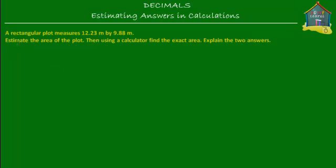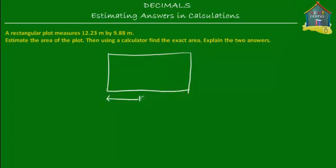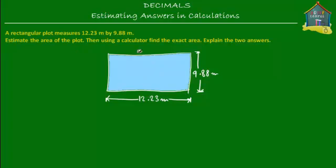A rectangular plot measures 12.23 meters by 9.88 meters. Estimate the area of the plot, then using a calculator find the exact area and compare the two answers. We have a rectangular plot where the longer side is 12.23 meters and the shorter side is 9.88 meters. The area of a rectangle is equal to the product of the two sides, so that's 12.23 meters times 9.88 meters.